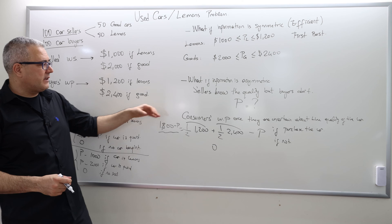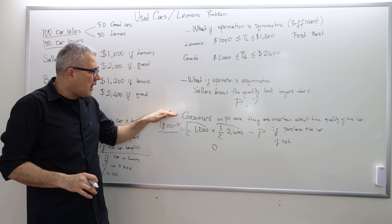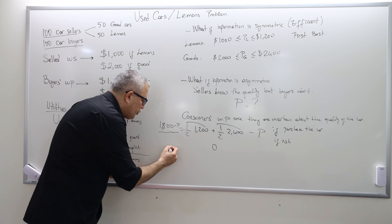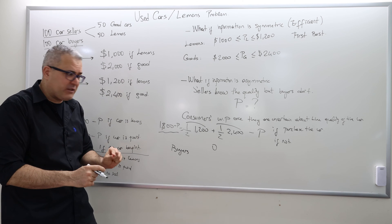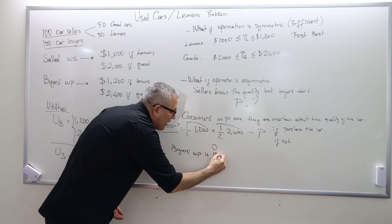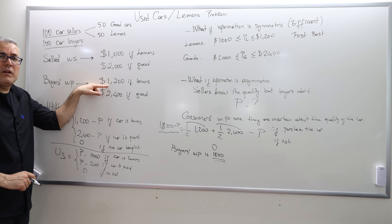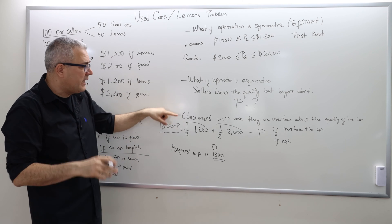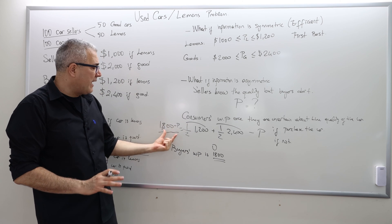So what does that tell me? That tells me that the consumers — the buyers — who can't distinguish the quality of the car, they're willing to pay at most $1,800. Because the information is asymmetric, the buyer's willingness to pay is $1,800. It's not $2,400, it's not $1,200 — it's just the average. We calculate the expected utility of buying the car, and it's $1,800 minus P.